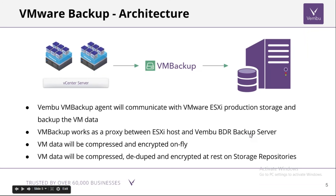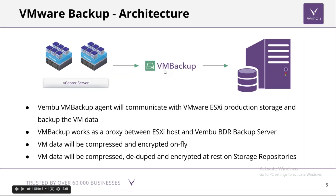Here is the architecture of VMware Backup using Wambu VM Backup. There are two important software components: the Wambu Media Server and the Wambu VM Backup Agent. This VM Backup Agent acts as a proxy between the vCenter/ESXi server and the Wambu BDR server. It reads data from vCenter, encrypts and compresses it, and sends the encrypted cipher data to the BDR server, where the data is deduped and stored in a storage repository using our own file system, ensuring data is secured both in transit and at rest.